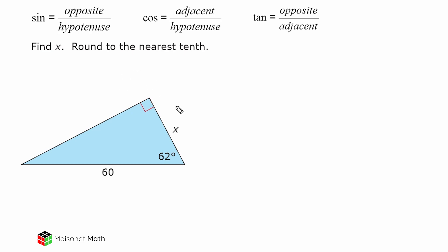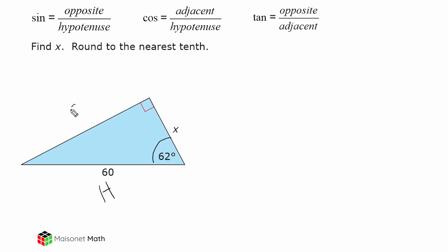Same thing in this problem — we just have to figure out what the length of x is, given this angle of 62 degrees and the length of this side, which is 60 units. So let's label what each side is relative to this angle. The longest side is the hypotenuse, so I'll label that right away. Then we have the two sides forming this right angle — one will be your opposite side relative to this angle, and one will be adjacent. The one that does not form the angle in question is always your opposite, which leaves us with the adjacent side.